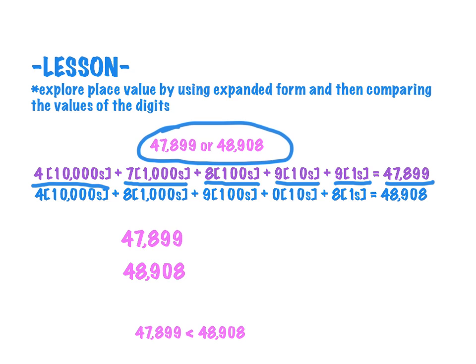Then if we move down to the second number, we've got again 4 ten-thousands, 8 thousands this time, 9 hundreds, 0 tens, and 8 ones. So if we were to look at that in expanded form, we should be able to determine that 47,899 is less than 48,908.